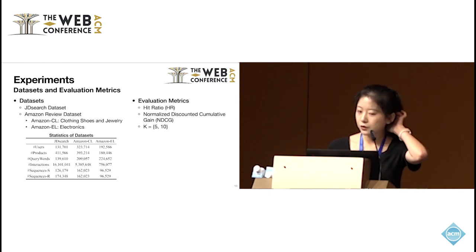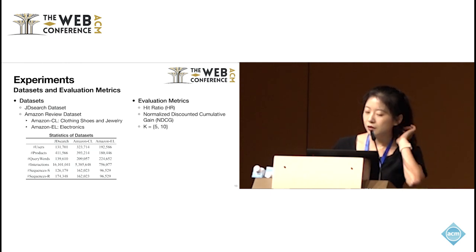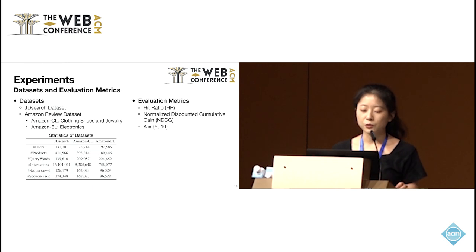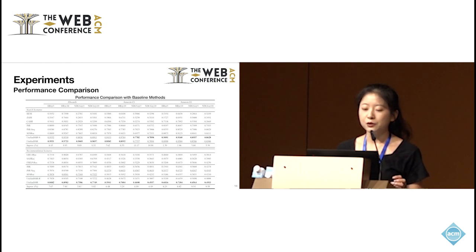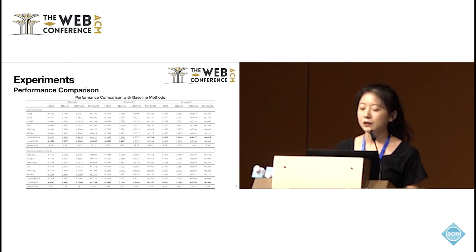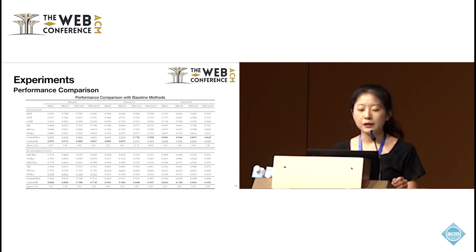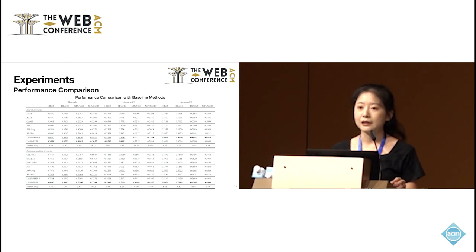We use three datasets: the JD search dataset and two subsets of Amazon review datasets. We use Hit Ratio and NDCG as evaluation metrics. We select three search baselines, three recommendation baselines, and three joint learning baselines for comparison.